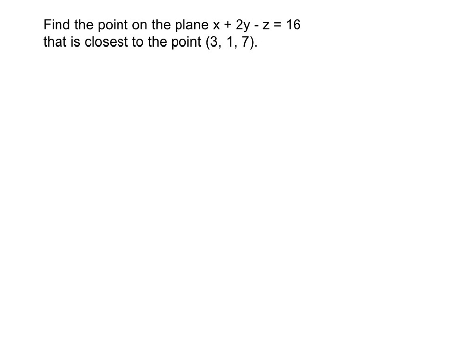Find the point on the plane x plus 2y minus z equals 16 that is closest to the point (3, 1, 7).